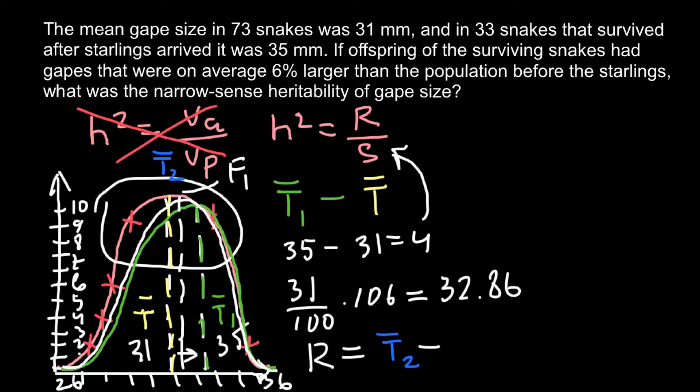So R would equal to mean of F1 generation minus mean of the original generation. So this is going to be mean of F1 generation. So 32.86 minus mean of the original generation, that is 31 millimeter. So minus 31. And the answer here would be 1.86. And this is going to be R in our formula.